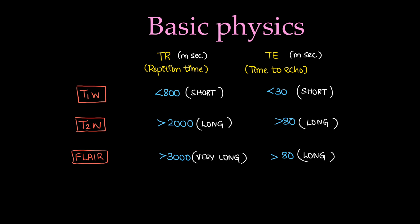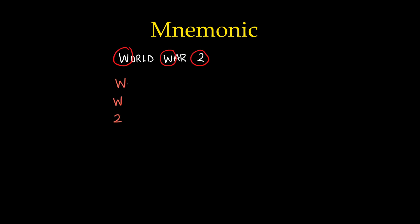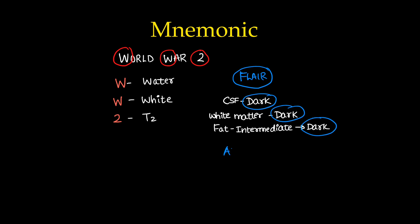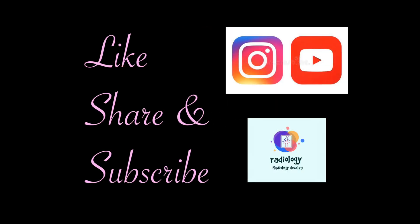An easy mnemonic to remember how structures appear: 'World War II' — Water White T2, meaning water appears white on T2 weighted images. For FLAIR: CSF is dark, white matter is dark, and fat is intermediate to dark — remember all dark is FLAIR. World War 2 for T2 (water white), and all dark for FLAIR. Like, share, and subscribe for more such videos and follow our page Radiology Doodles.